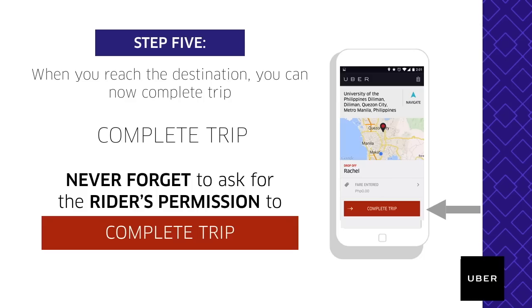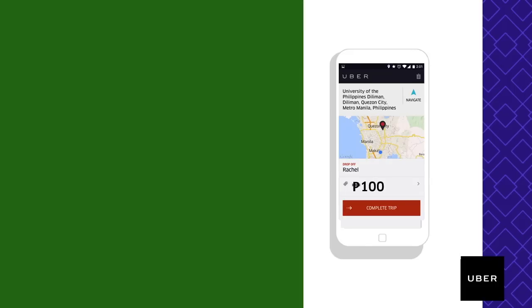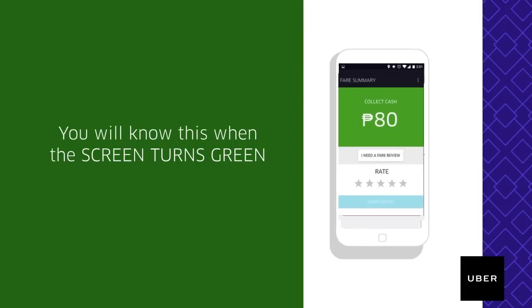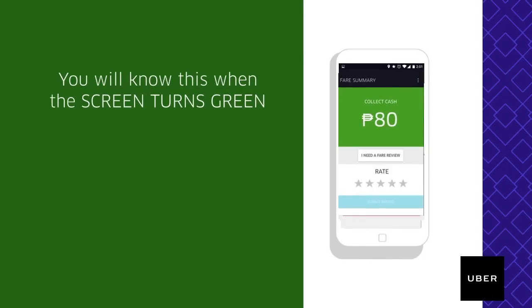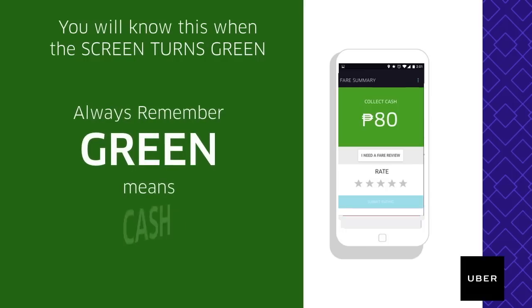Upon reaching the destination, you can now complete the trip. Never forget to inform the rider before you complete the trip. After ending the trip, you will see the fare summary that was charged to the rider. The trip is usually charged to the rider's credit card, but sometimes the rider can also select the cash option. You will know this when the screen turns green — always remember, green means cash.